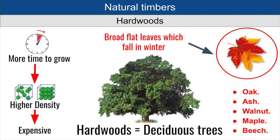As you can see on the slide, the leaves also turn orange during this time. Examples of hardwoods that come from deciduous trees include oak, ash, walnut, maple and beech. Hardwoods take a lot longer to grow than softwoods, which means they're more expensive because they're not as easy to get hold of. Because they take longer to grow, they also have a higher density, meaning they weigh more than softwoods.